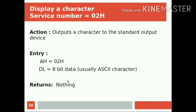Another service is to display a character to the standard output device. The service number is 02H. The action outputs a character to the standard output device. For entry, AH must be set to 02H, and the character to be displayed must be given through the DL register — DL is set to the ASCII value of the character to be displayed. This will display the corresponding character on the standard output device and then returns. We have a number of additional services which can be found by searching online.